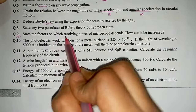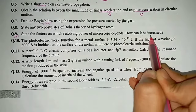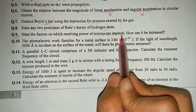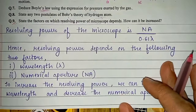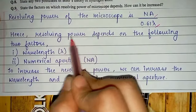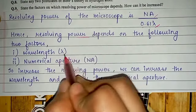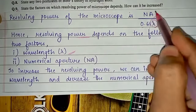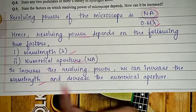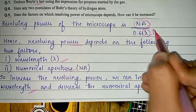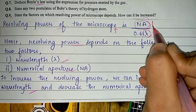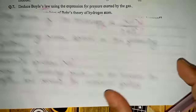Question number 9: state the factors on which the resolving power of a microscope depends and how it can be increased. Resolving power of microscope = NA / (0.61 × λ). It depends on wavelength λ and numerical aperture NA. To increase resolving power, we can decrease the wavelength and increase the numerical aperture.